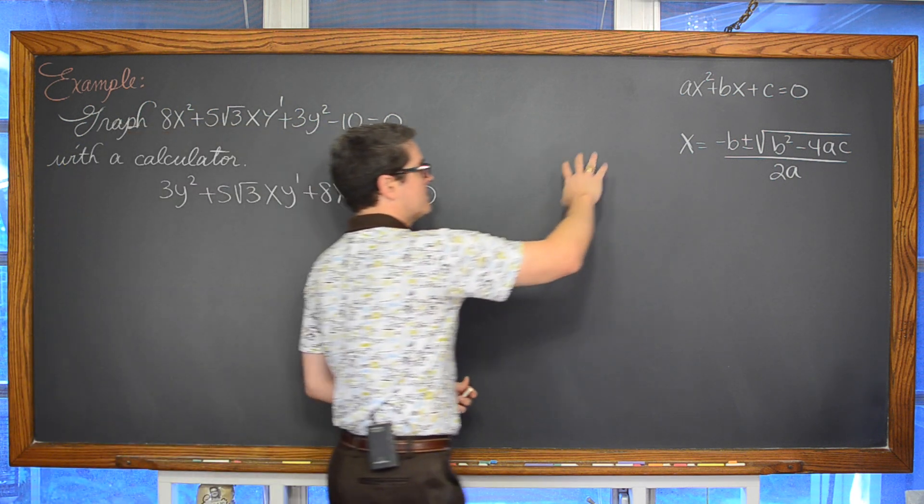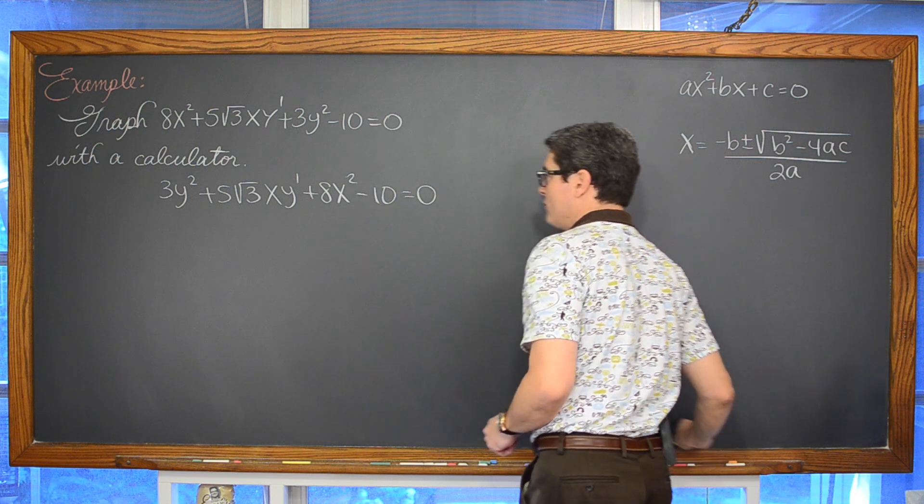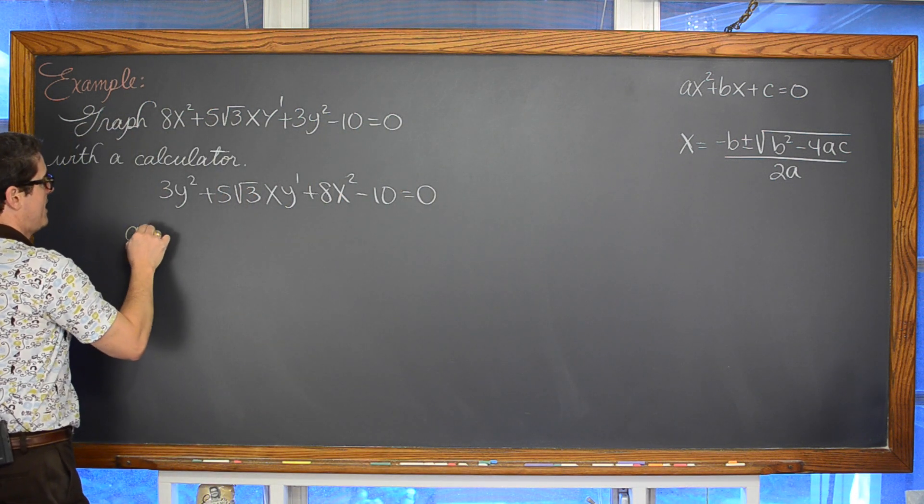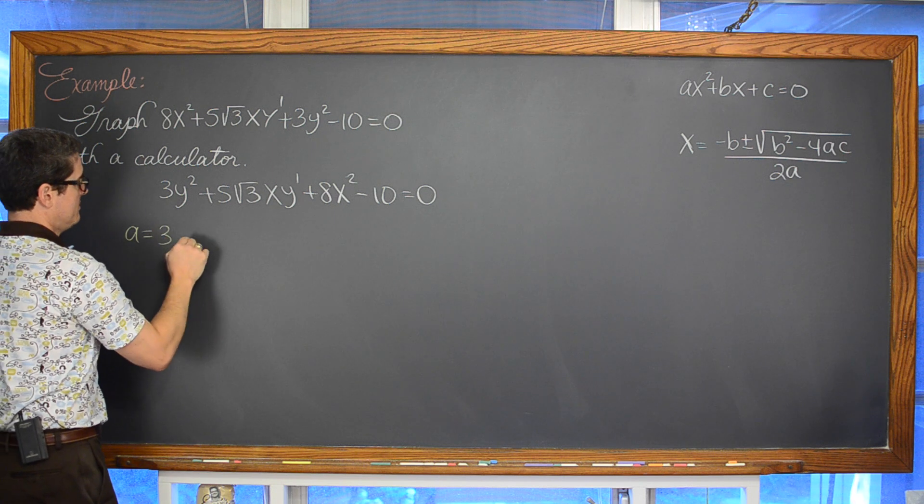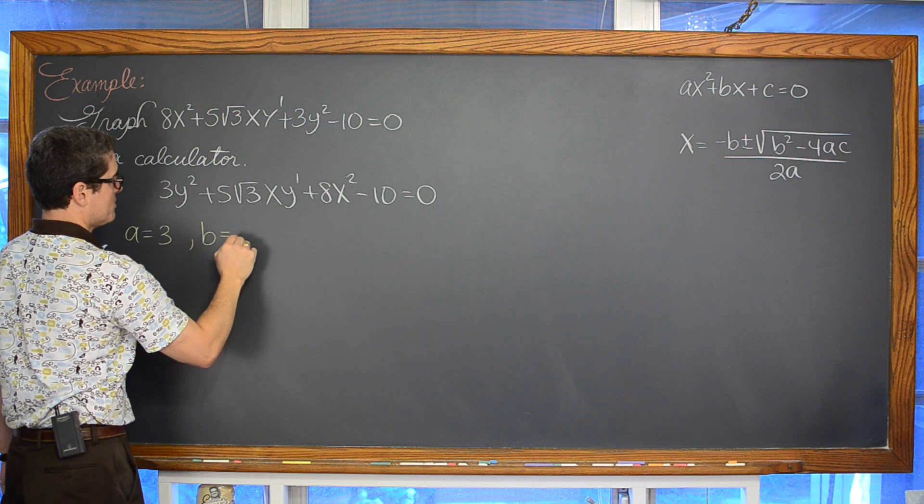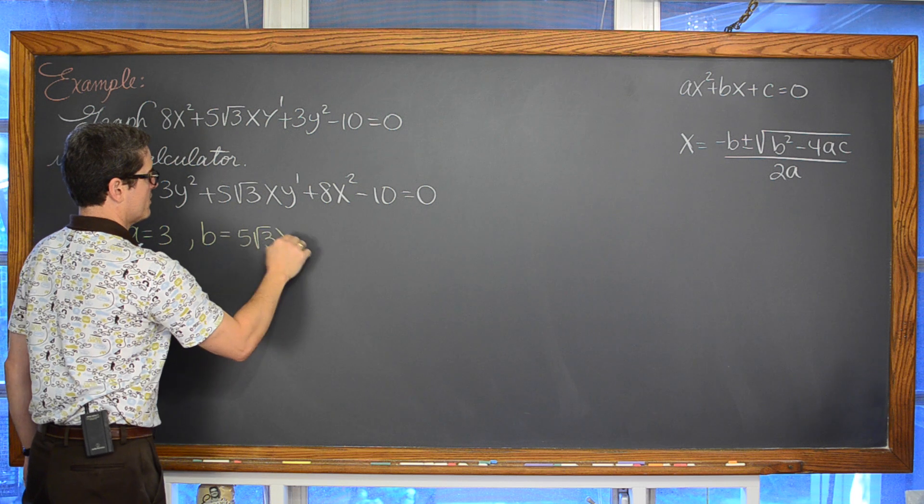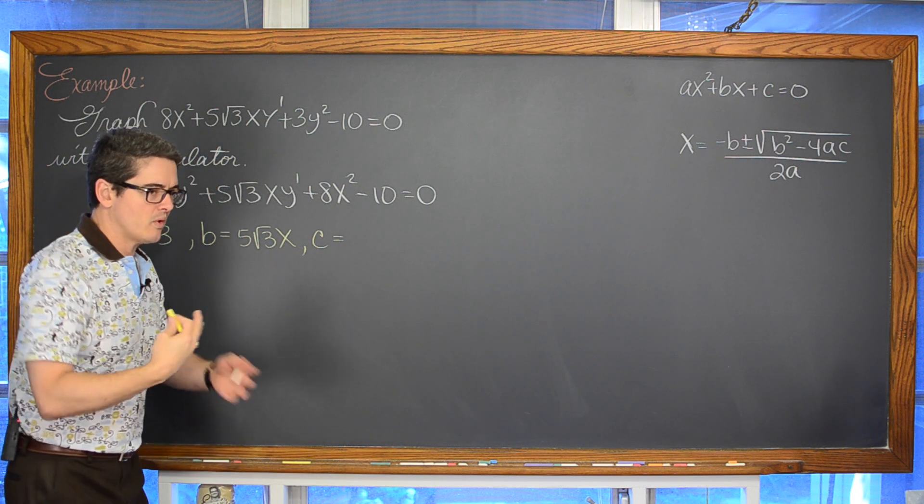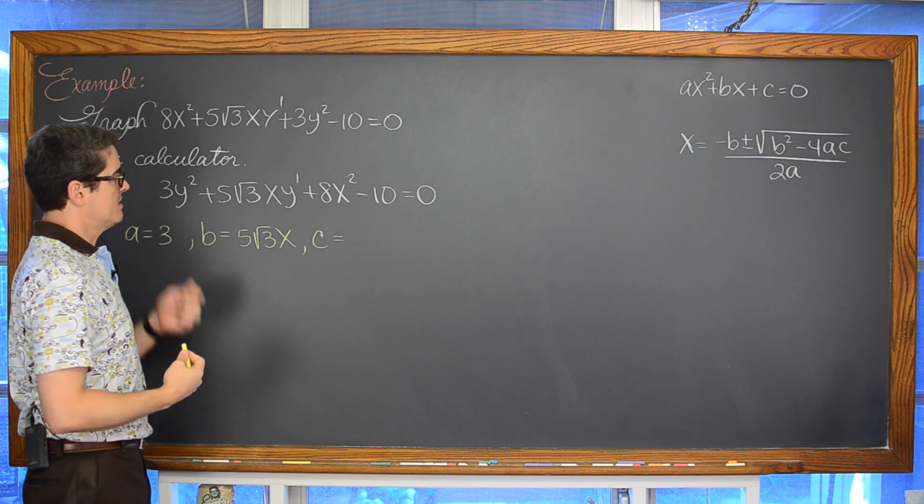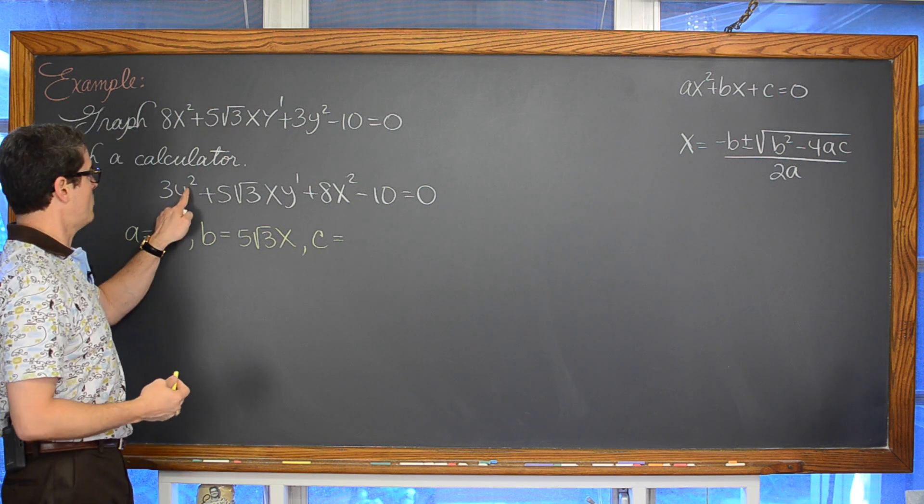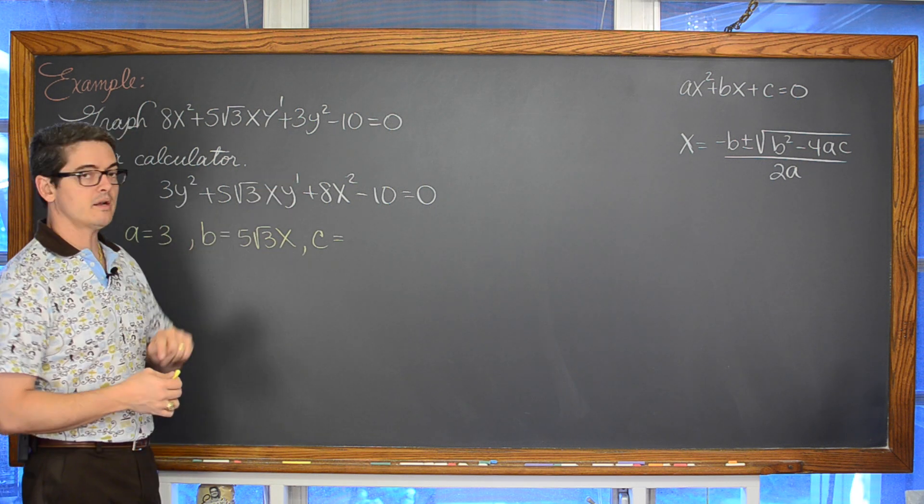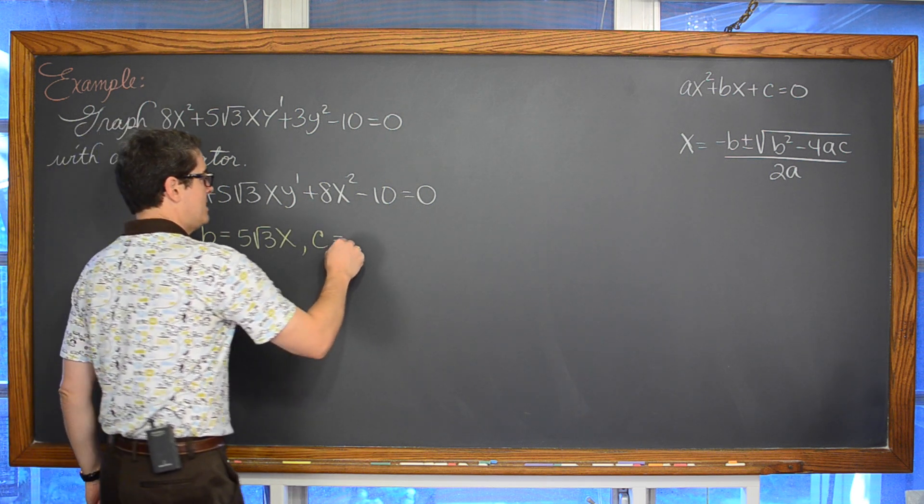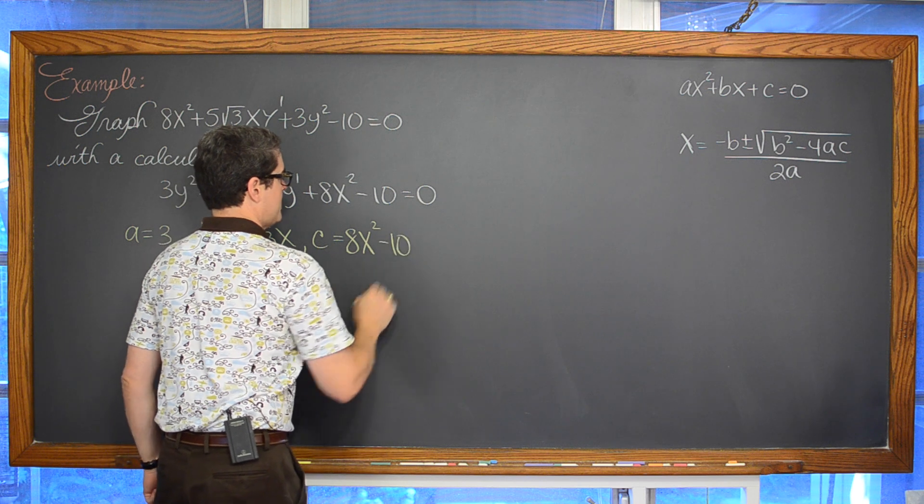Now again, thinking about this idea of having coefficients of a, b, and c, that means that my value of a is going to be 3, b is going to be equal to 5√3x, and c is going to be that constant or whatever is left in this equation that does not have a y², that does not have a y to the first, just whatever is left over. That means that c is going to be equal to 8x² - 10.